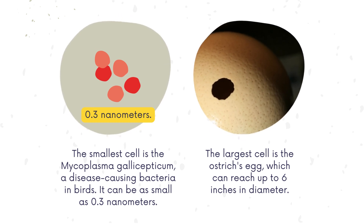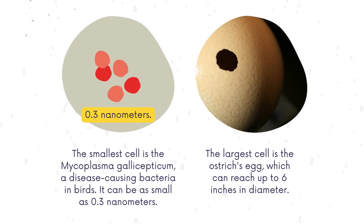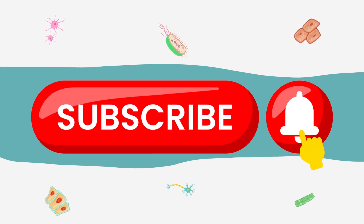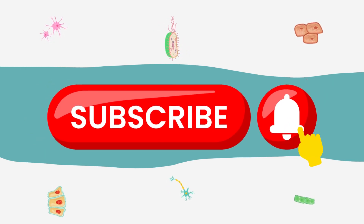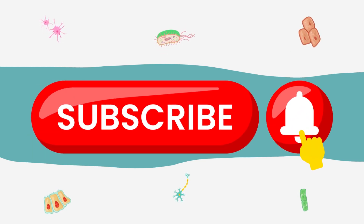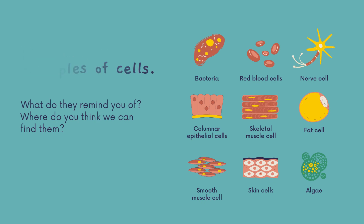The largest cell is the ostrich's egg, which can reach up to 6 inches in diameter. Here are some examples of cells: bacteria, red blood cells, nerve cell, columnar epithelial cells, skeletal muscle cell, fat cell, smooth muscle cell, skin cells, and algae.